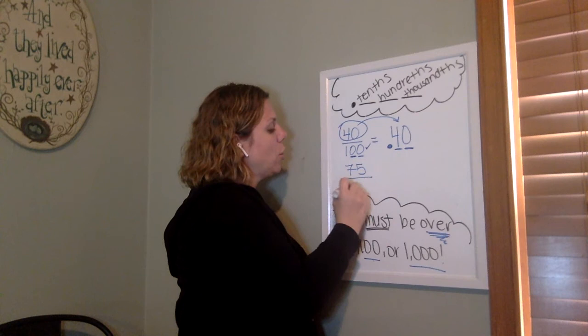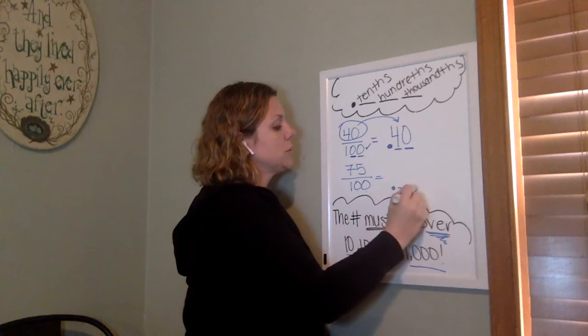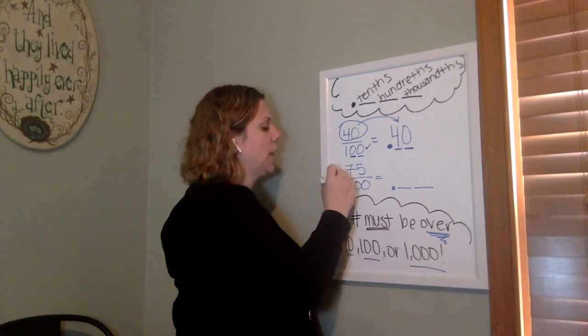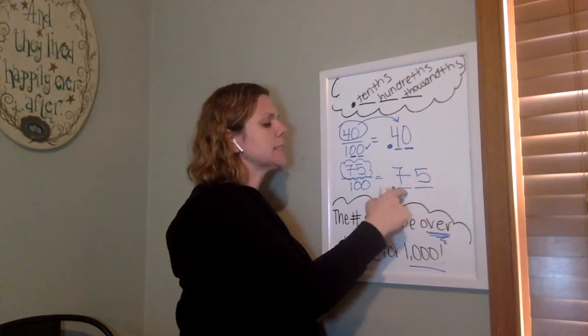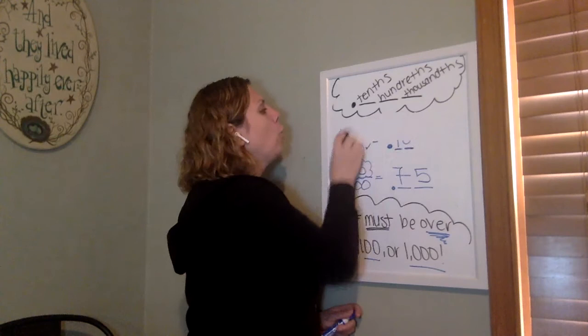So now I have 75 over 100, two zeros, two spaces. Check if you're over 10, 100, or 1000. And I am. Take my top number, fill it in the spaces. Don't skip writing those spaces. They really help us and stop us from making mistakes.